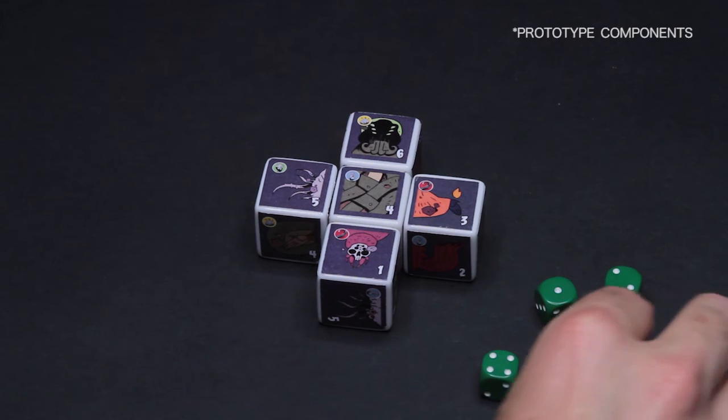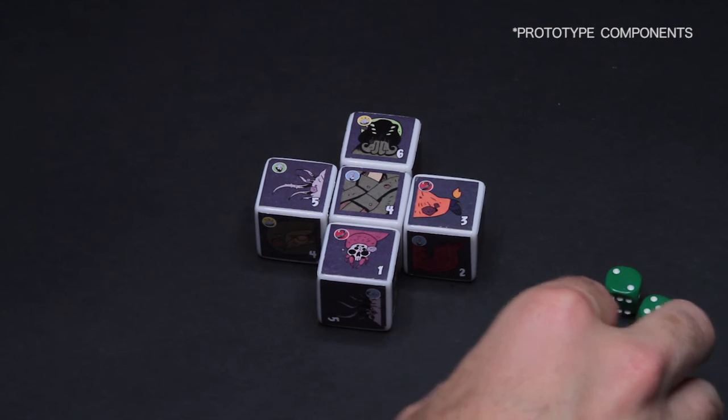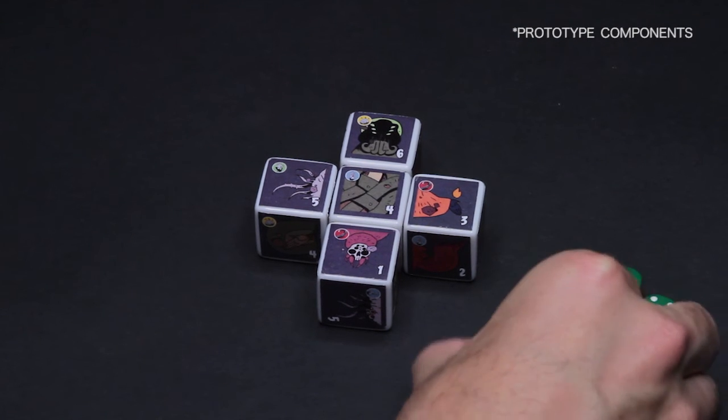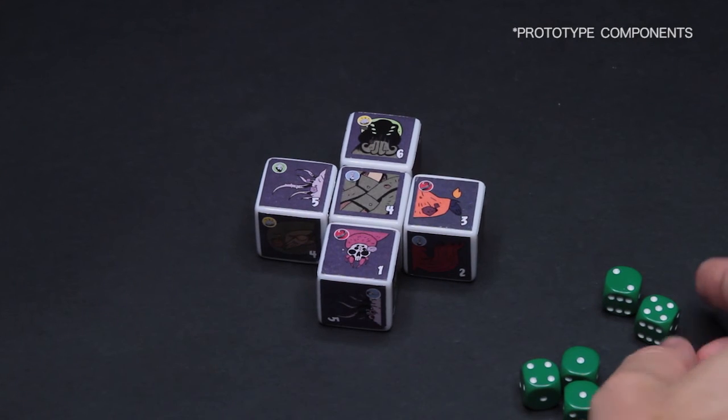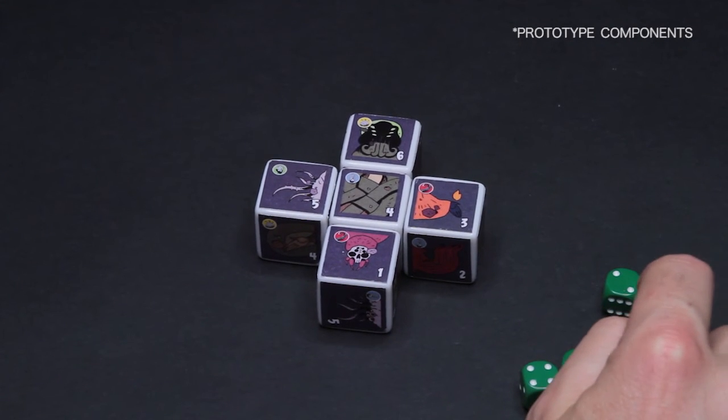You can add up any number of dice to do that if you want. You could put a 4 and a 1 together to activate it, and so forth. So you activate as many elder dice as you want on each turn.